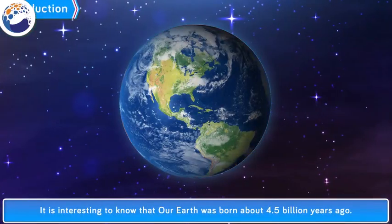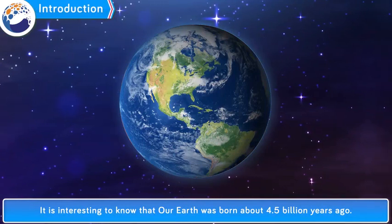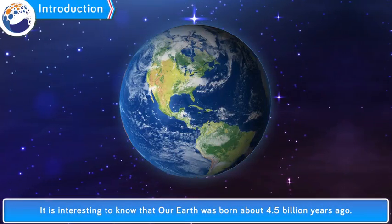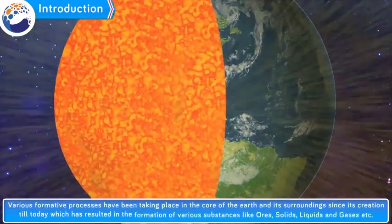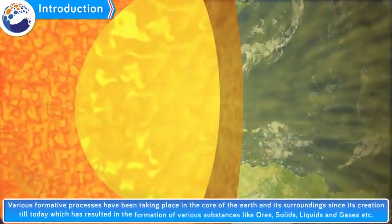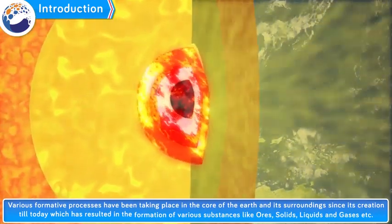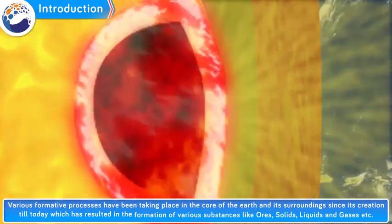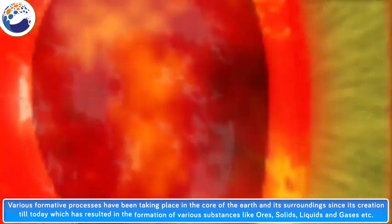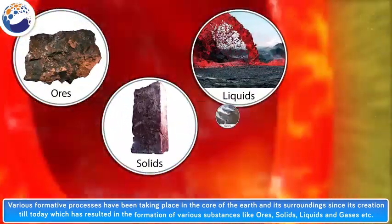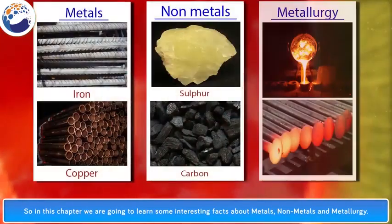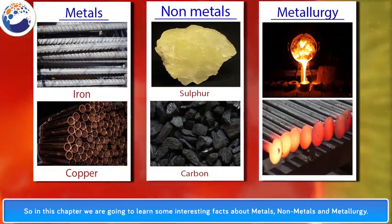Metallurgy. It is interesting to know that our earth was born about 4.5 billion years ago. Various formative processes have been taking place in the core of the earth and its surroundings since creation till today, which has resulted in the formation of various substances like ores, solids, liquids and gases. So in this chapter we are going to learn some interesting facts about metals, non-metals and metallurgy.